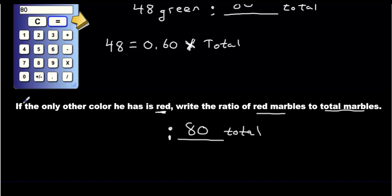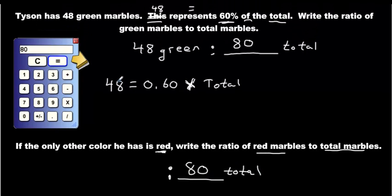But how many of them are red? Well, we know he has 80 altogether. And of those 80, 48 of them, so I'm going to minus them, 48 of them are going to be what? They're going to be green, so get rid of them. The rest are going to be red. So we have 32.